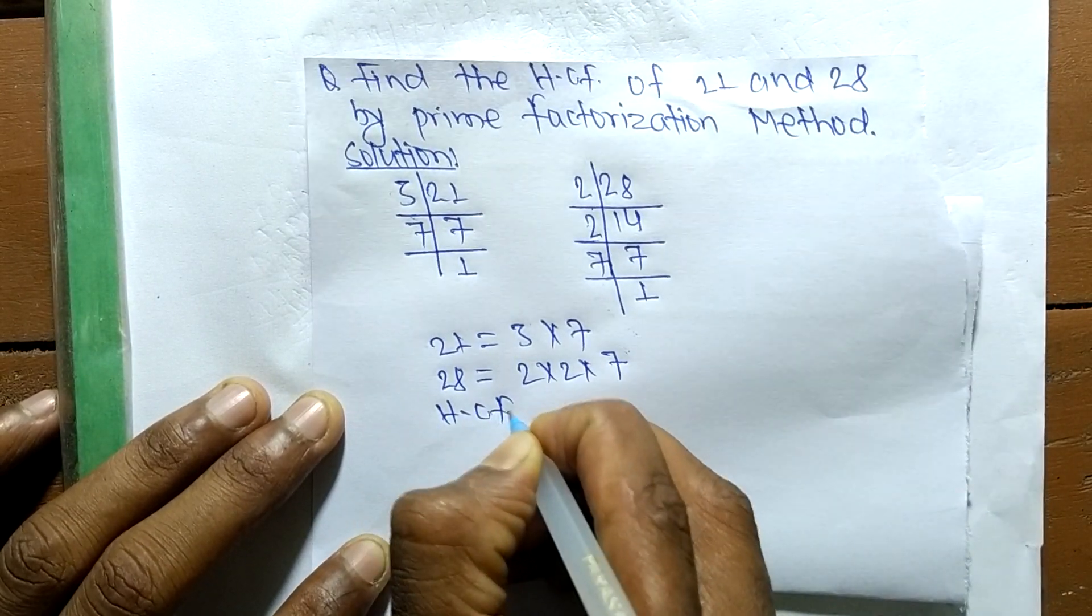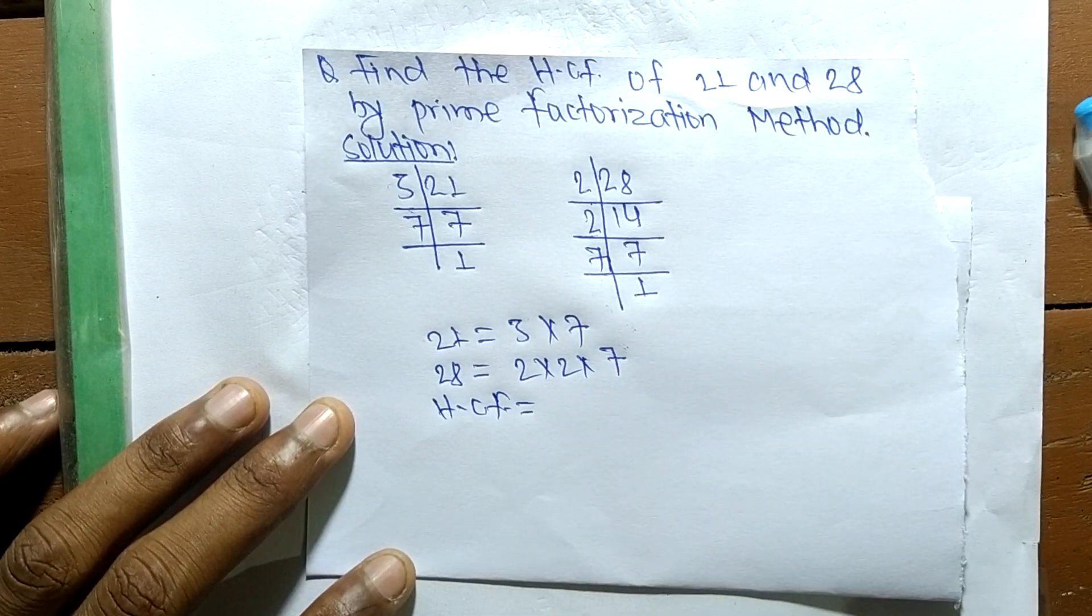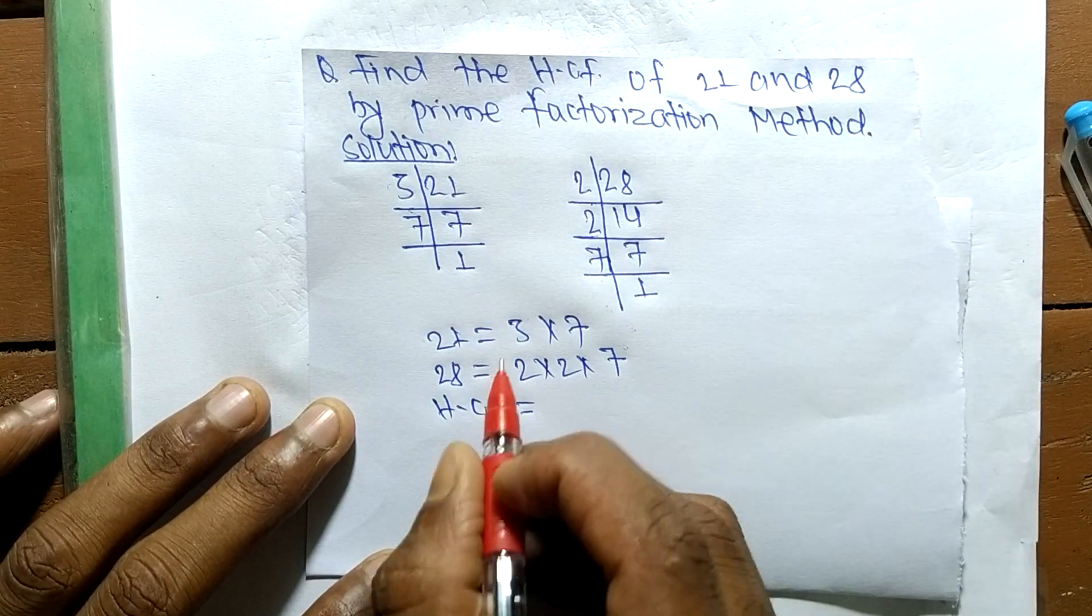So its HCF is equal to - now we have to find out the common factors in the prime factors of 21 and 28.